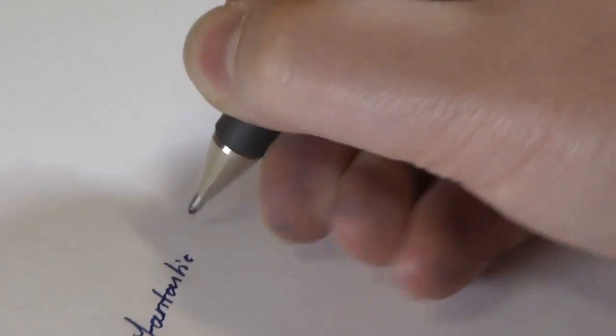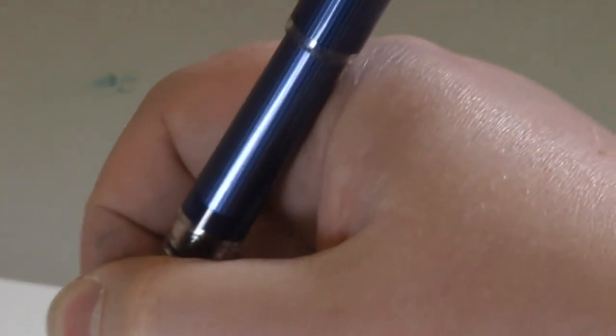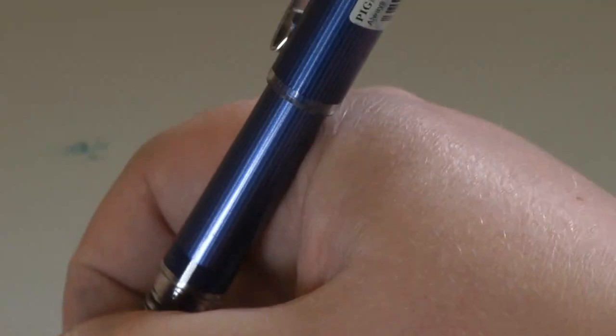When the gel ink pen is not in use, the ink inside the barrel is a solid gel, but as soon as the pen is used, the friction from the metal ball turns the solid gel into a liquid which then smoothly flows over the metal ball onto the page.